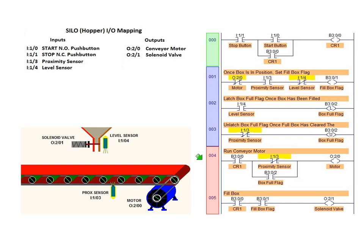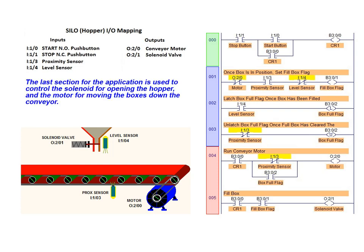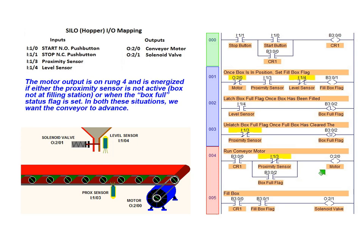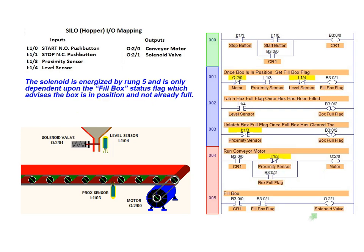The last section of the silo program consists of two rungs which are used to control the outputs of the application. One rung controls the conveyor motor, which brings boxes to and carries boxes from the filling station. The other output rung controls the solenoid valve. We have included B3 0.0 contacts on each of these output rungs to ensure that continuity is interrupted if the seal-in circuit is broken, which would occur when the stop button is pushed. The motor output on rung 4 is energized if either the proximity sensor is not active or if the box full status flag is set. The solenoid is energized by rung 5 and is only dependent upon the fill box status flag, which advises when the box is in position and not already full.